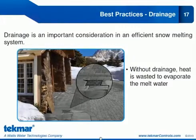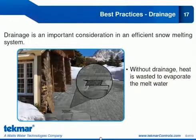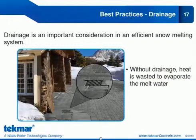Drainage is another best practice in snow melting. Without proper drainage, heat is wasted because it must evaporate the meltwater — and evaporating meltwater requires approximately 900 times more energy than melting the snow itself. This can lead to extremely high operating costs. To have effective drainage, you may require drains to be heated so they don't freeze up, which can be done by wrapping tubing around the drain pipe.